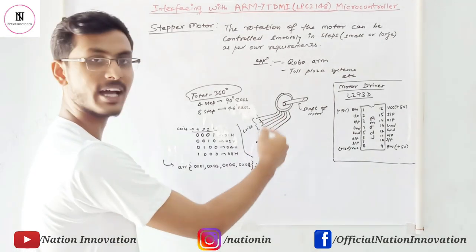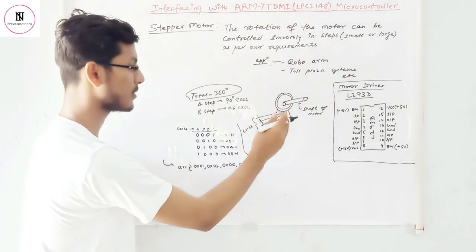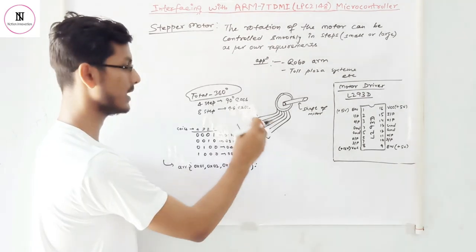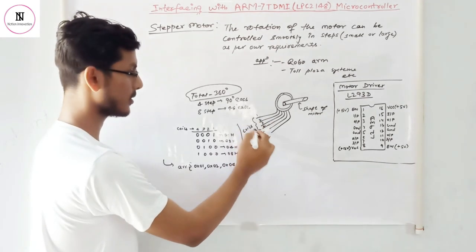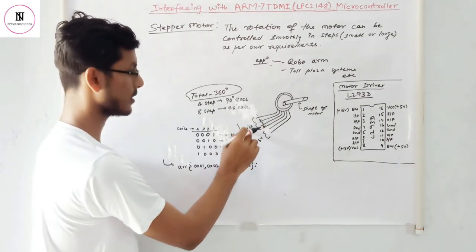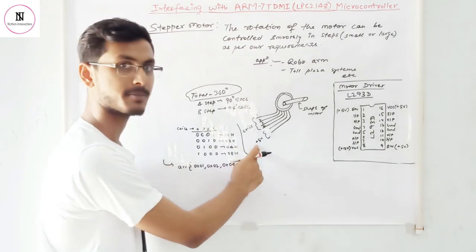And the stepper motor rough diagram is shown here. In the stepper motor, there are six coils. In the coils, four coils are for the rotation control and the two are for the power supply requirement.